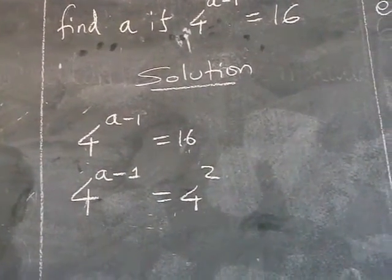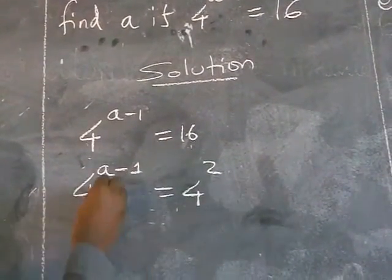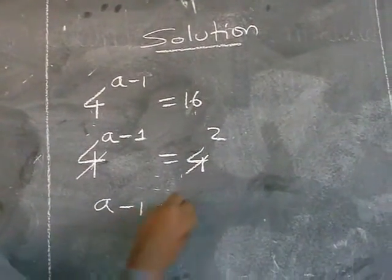And according to the rules of exponents, if the bases are the same, they can cancel out. So 4 will cancel out with 4 and it will remain with a minus 1 equals to 2.